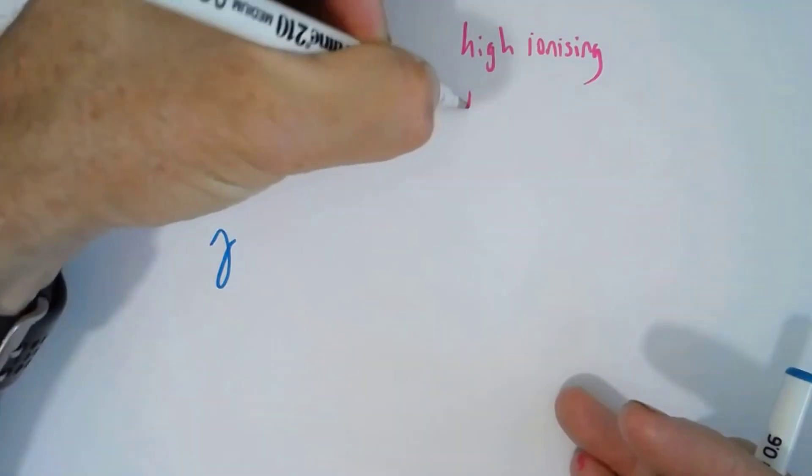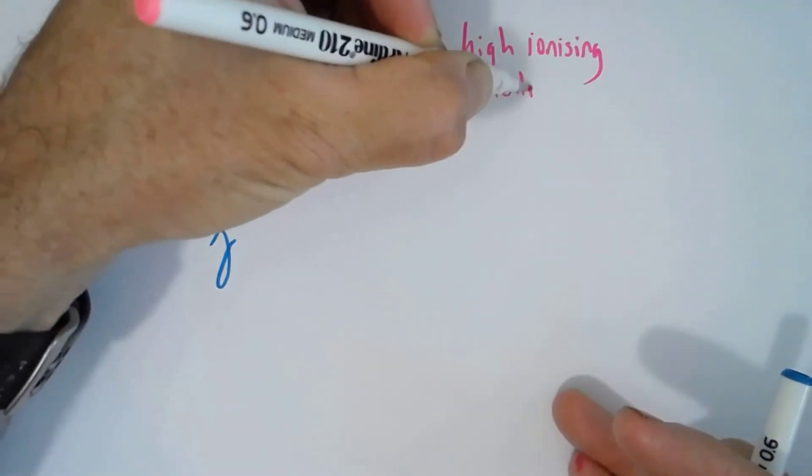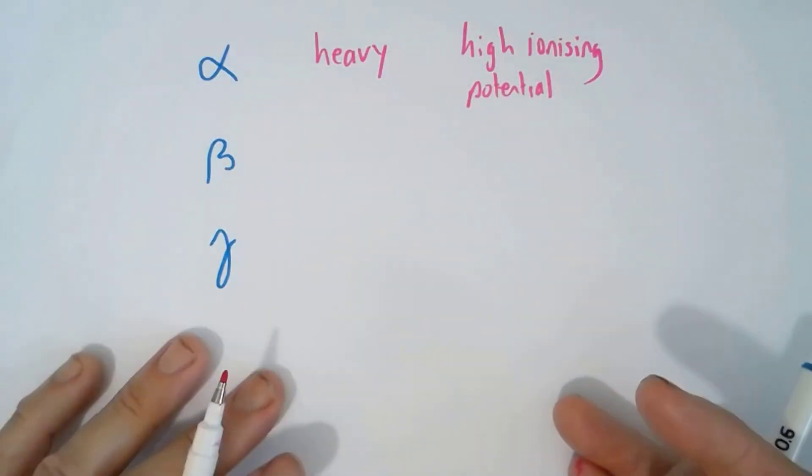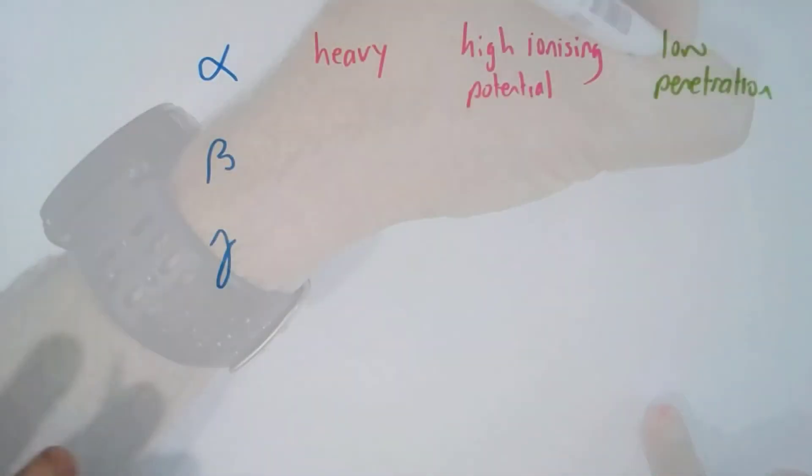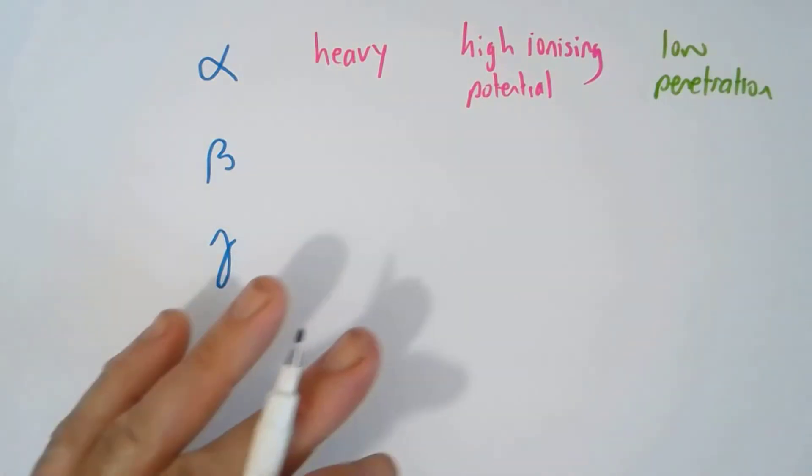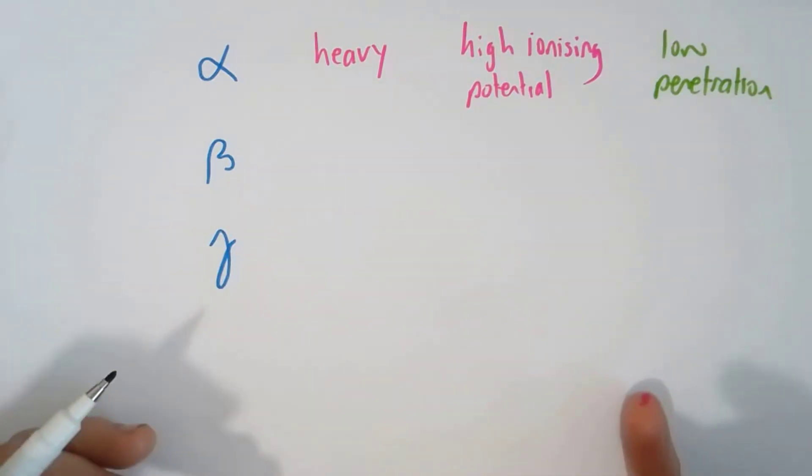However, because they are heavy and slow, they have low penetration. They can't even get through our skin. Alpha decay is not dangerous unless it's ingested - so in other words, swallowed or breathed in, like with that Russian.